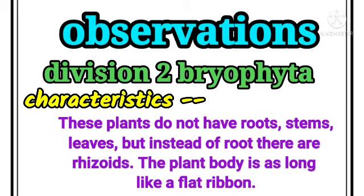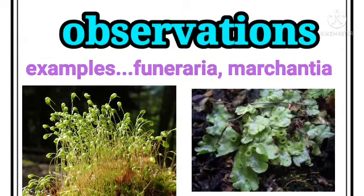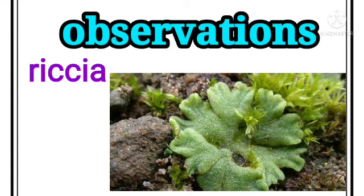Division 2 — Bryophyta characteristics: these plants do not have roots, stem, or leaves, but instead of roots there are rhizoids. The plant body is long like a flat ribbon. Examples include Funaria, Marchantia, and Riccia.